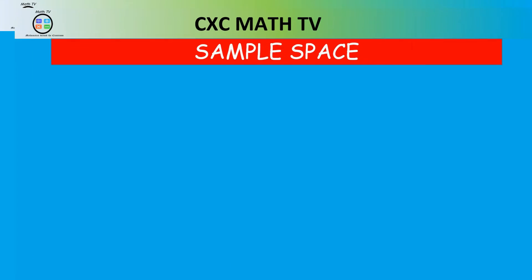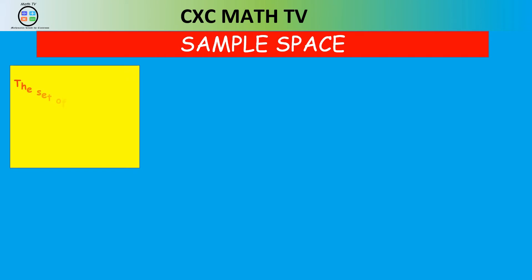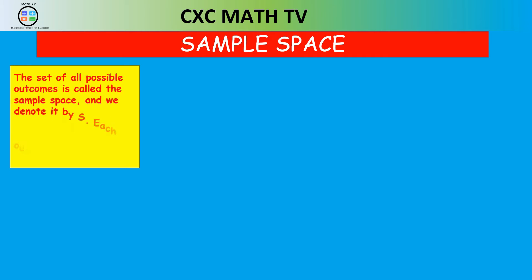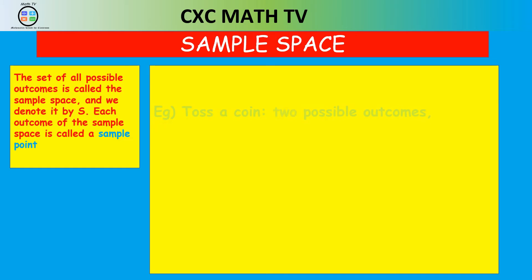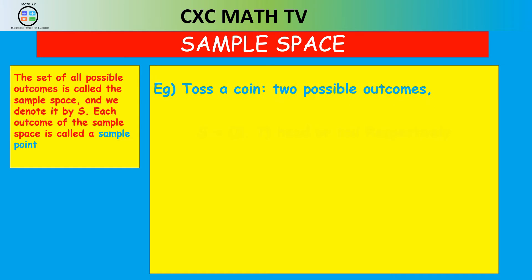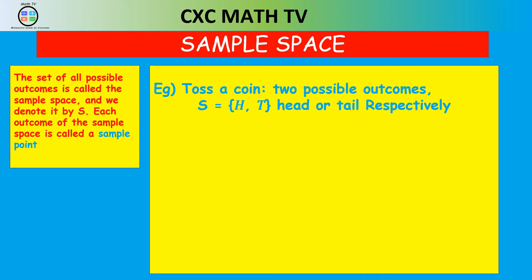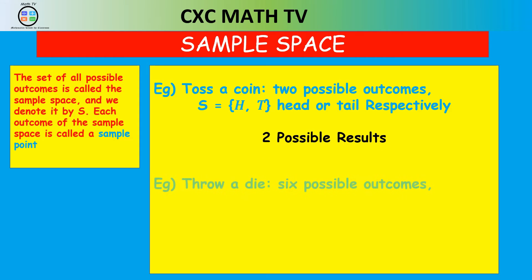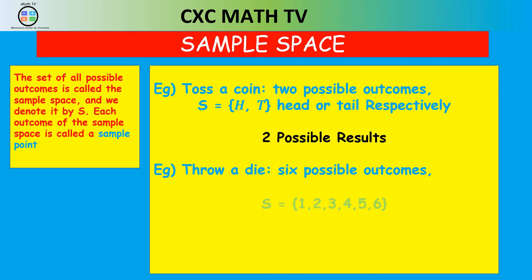Let's look at the sample space more closely. If you toss a coin there are two possible outcomes — head or tail — so in set notation: S = {H, T}. If you throw a die, S = {1, 2, 3, 4, 5, 6} because a die has six possible results.